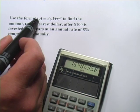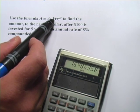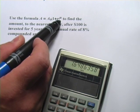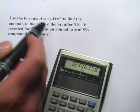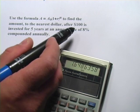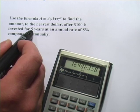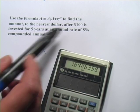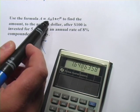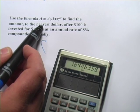This one says use the formula A equals A sub 0 times 1 plus R to the N to find the amount to the nearest dollar after $100 is invested for five years at an annual rate of 8% compounded annually. So this is actually a formula for calculating interest, which is pretty cool.